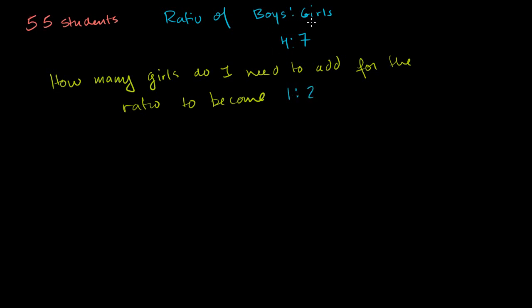And this is the ratio of boys to girls. I'm not switching the ratio on you. So right now for every 4 boys, I have 7 girls. I want to add some girls so that the ratio becomes for every boy, I have 2 girls. So how can we do this?